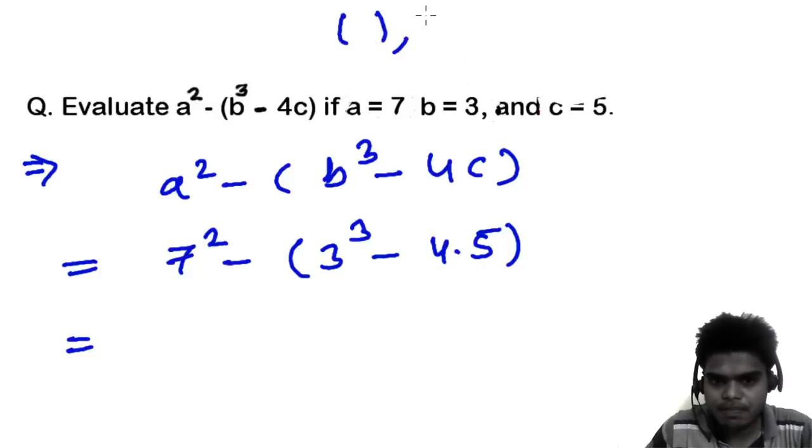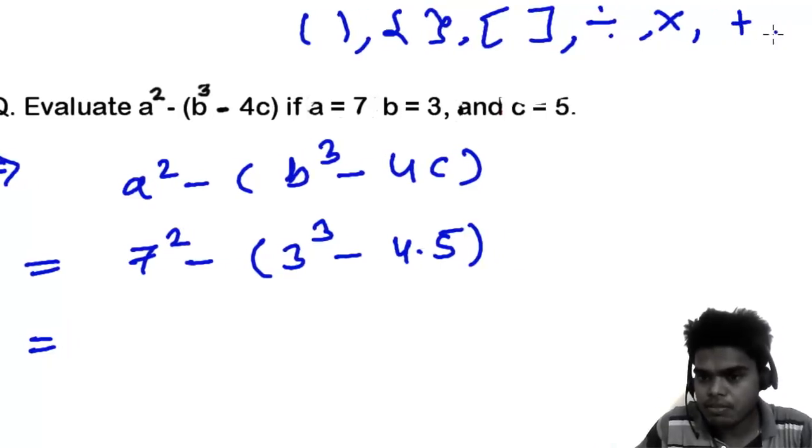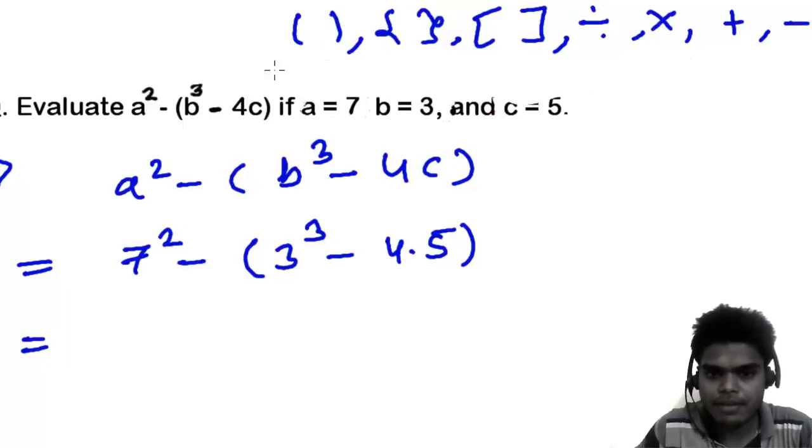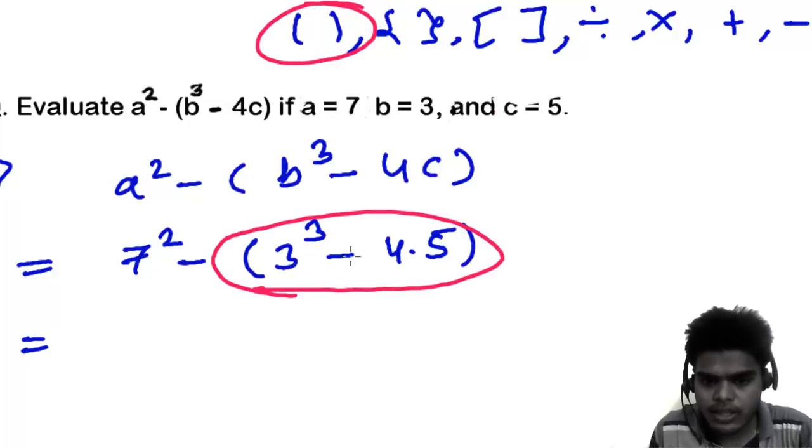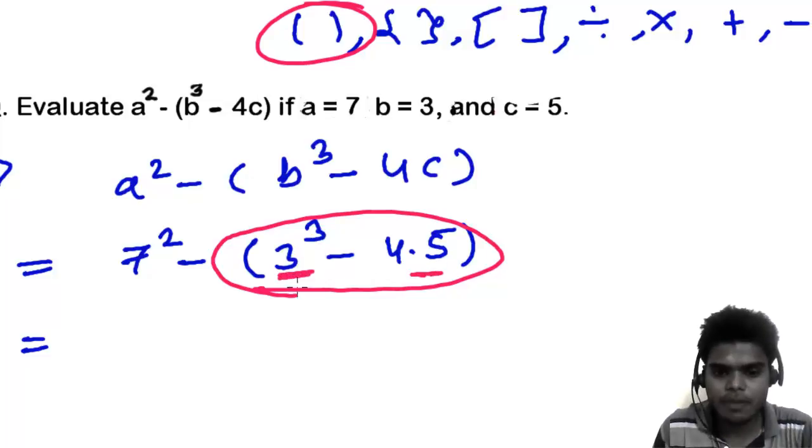Now if you go to the BODMAS, first you need to start with the brackets, and then division, and then multiplication, and then addition, and then subtraction. So what we have here? First thing here we have is this thing. Let's finish this whole thing first. But to finish these things, we have even smaller expressions inside. For that, first we need to evaluate this, and then this, and then this.